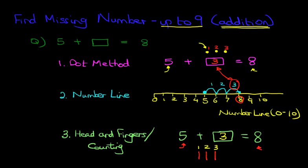Now let's just compare all the answers. We've got 3 over here using the dot method. That was our answer. We've got 3 using the number line. And we've got 3 using the head and fingers counting method. All three methods, we've got the same result. So that is how we find the missing number with numbers up to 9 when we are doing addition.